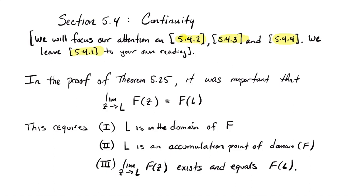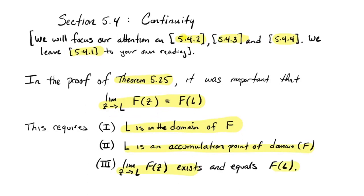Let's recall that at the end of Section 5.3, we looked at a theorem about the limit of a composition — Theorem 5.25. In that theorem, there was a function F defined in a neighborhood of a number L, and the limit as Z approached L of that function equaled F(L). It was important that L be in the domain of F, that L be an accumulation point of the domain, and that the limit exists and equals F(L).